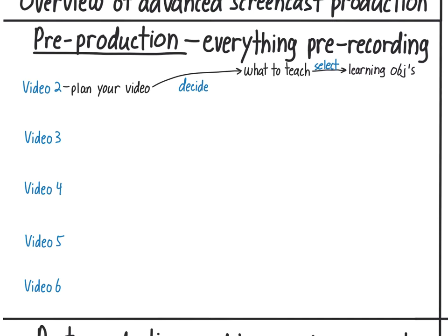For example, maybe you want to focus more on skills than content, or if you're a math teacher, focus more on math involved in financial literacy. You'll also have to decide how to teach your content, so you should select exactly what the students will do to achieve the learning objectives. This is where you decide whether video is the best way to teach them something, and how else you want them to learn the content — be it from reading, speaking, doing problems, whatever.